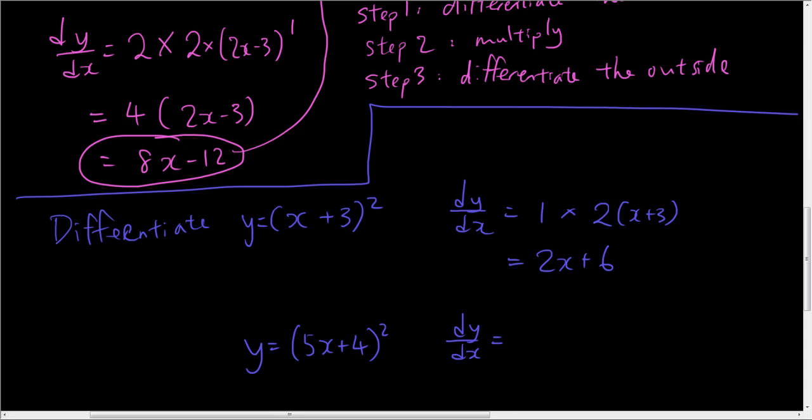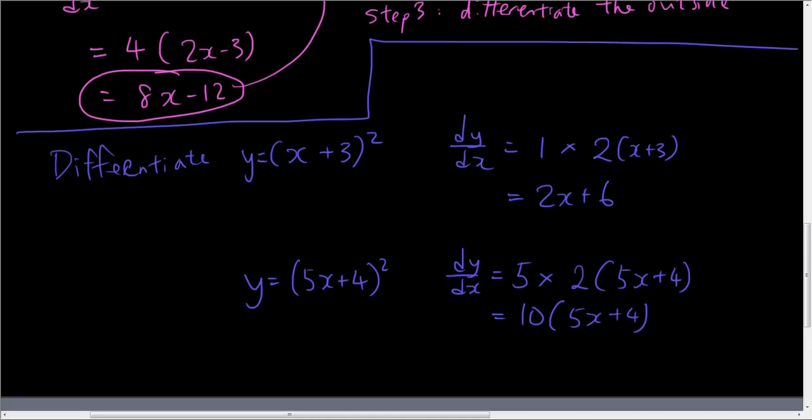Okay. So the answer is inside differentiated is 5 times. The outside differentiated is 2(5x + 4). So the answer is 10 times (5x + 4). Which is 50x plus 40.